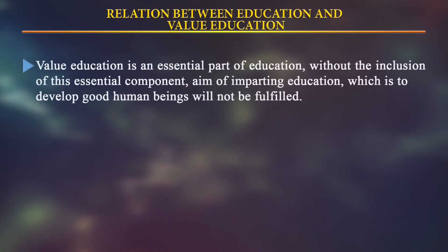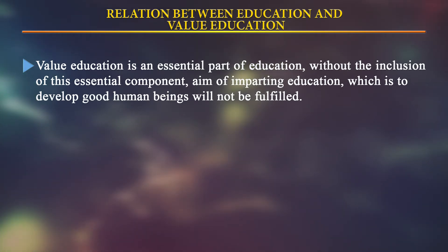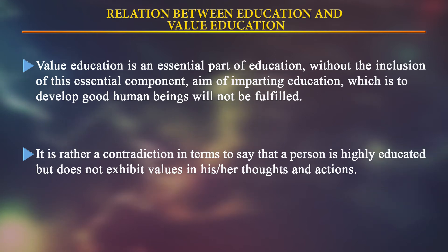Now the second objective is to understand the relationship between education and value education. Value education is an essential part of education. Without the inclusion of this essential component, the aim of imparting education — which is to develop good human beings — will not be fulfilled. It is a contradiction to say that a person is highly educated but does not exhibit values in thoughts and actions.